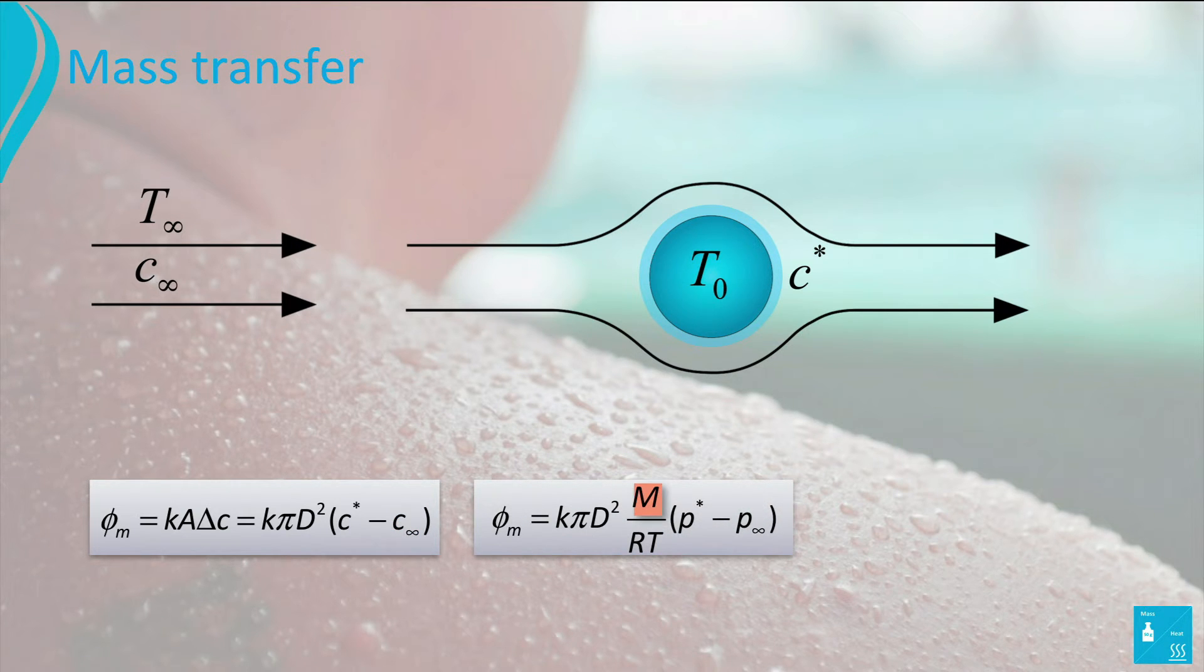Where M is the molar mass of water, P* is the vapor pressure of the air near the surface of the droplet, and P_∞ is the vapor pressure of the incoming gas. For the value of T in this equation, usually the mean of T_∞ and T_0 is taken.